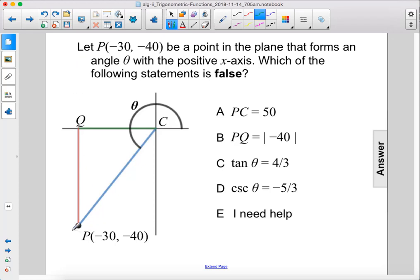Let P of negative 30, negative 40 be a point in the plane that forms an angle theta with the positive x-axis. Which of the following statements is false?